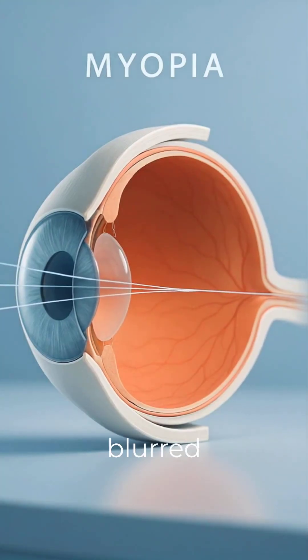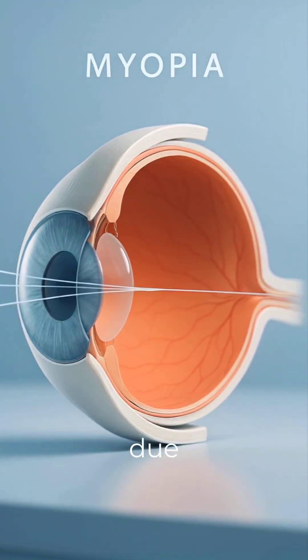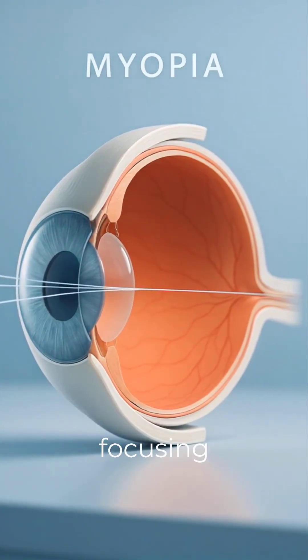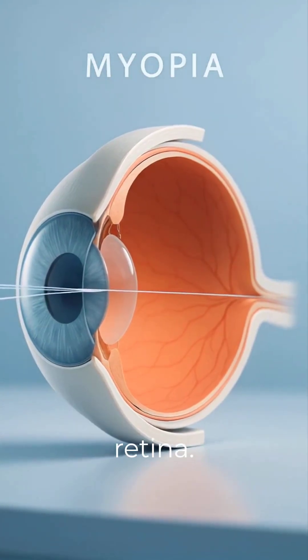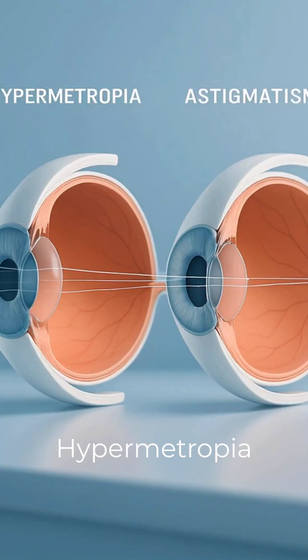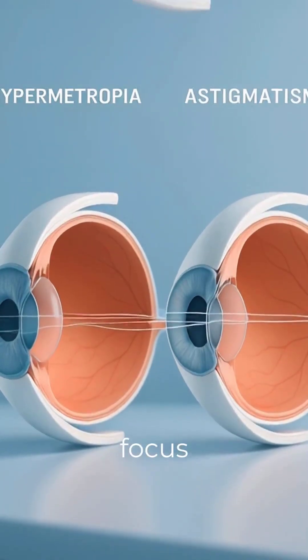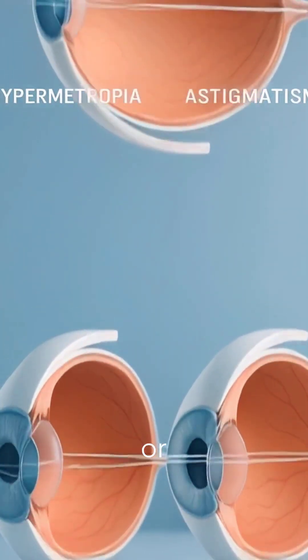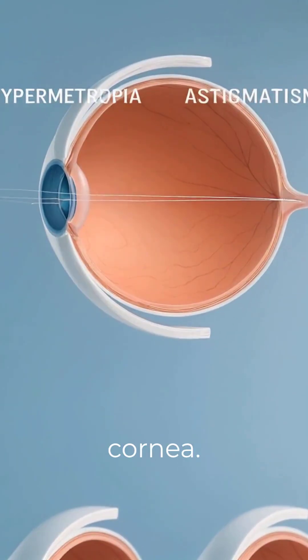Myopia causes blurred distant vision due to light focusing in front of the retina. Hypermetropia and astigmatism result from focus behind or unequal curvature of the cornea.